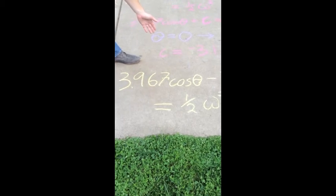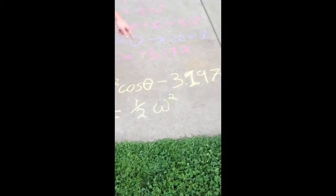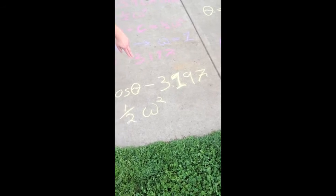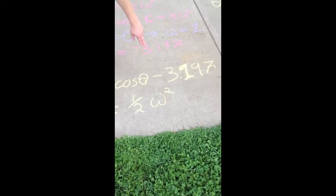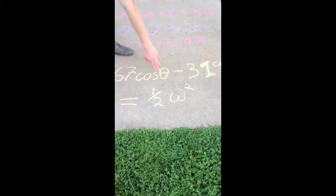Plugging that back into our original equation gives us 3.967 cosine theta minus 3.197 equals one half omega squared.